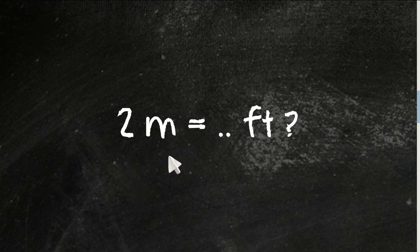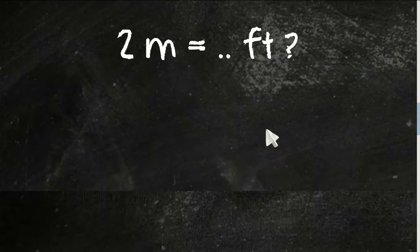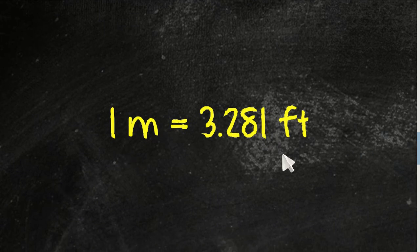So this is the question: 2 meters equals how many feet? And this is the formula that we will use to answer the question: 1 meter equals 3.281 feet. That's the conversion.